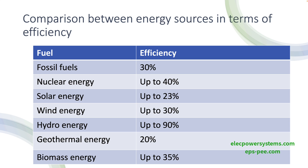Biomass energy is a renewable energy source that uses organic materials like wood, crops, and waste to generate electricity or heat. The efficiency of biomass energy depends on the type of technology used, but the average efficiency of modern biomass power plants is around 25 to 35 percent. The advantage of biomass energy is that it is renewable and can use waste materials as a fuel source, but the disadvantage is that it can have significant environmental impacts and compete with food production.